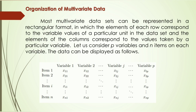Regarding the organization of multivariate data — how it actually looks — most multivariate data sets can be represented in a rectangular format. Elements of each row correspond to the variable values of a particular unit in the data set, and the elements of each column correspond to the values taken by a particular variable. Consider p variables — variable 1, 2, up to variable p — with n items.